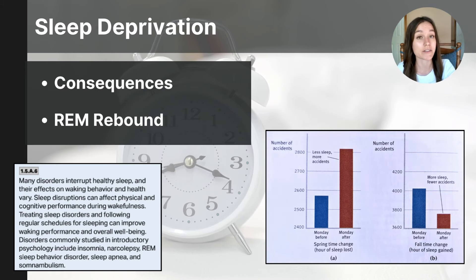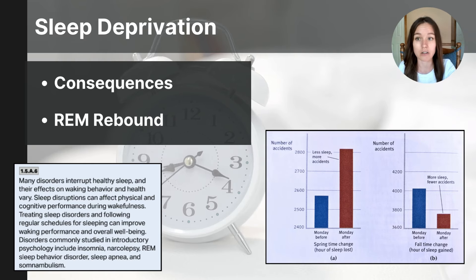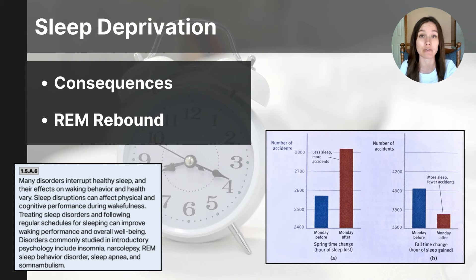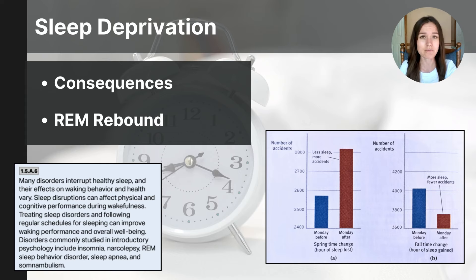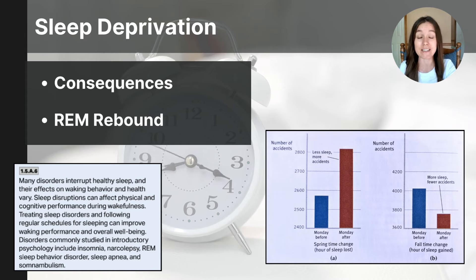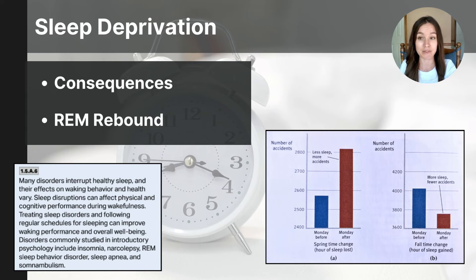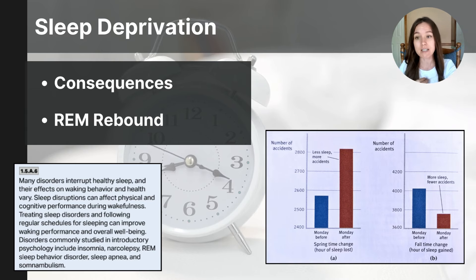Next, it's important to discuss the consequences of sleep deprivation. Sleep deprivation can lead to reduced attention and memory, emotional instability, higher risk of anxiety and depression, a weakened immune system, and increased risk of chronic conditions like cardiovascular disease and diabetes. It can impair motor skills and coordination, leading to a greater risk of accidents, and it disrupts hormonal balance, affecting hunger and stress regulation. A notable example is high school student Randy Gardner in 1969, who stayed awake for 11 days. He developed a heart murmur, slurred speech, couldn't hold a conversation for more than a few minutes, started hallucinating that street signs were people, and had delusions about his identity. Once he began sleeping again, his symptoms disappeared.